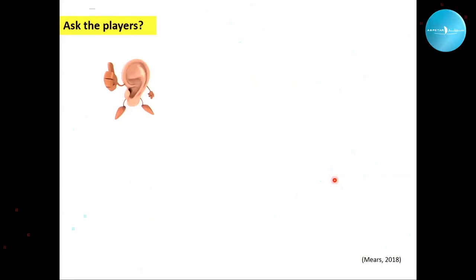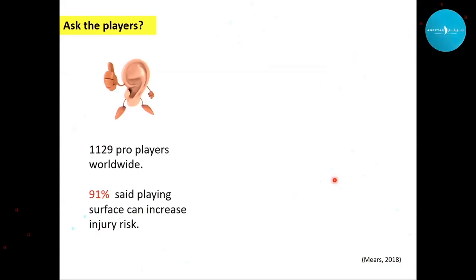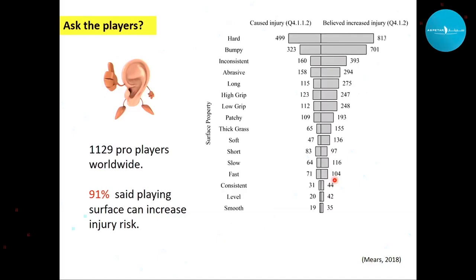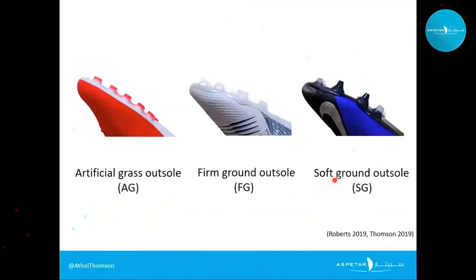When considering shoe and surface interaction, it's probably good to ask the players what they like. Mears did exactly that in Sports Medicine journal in 2018, asking a large cohort of professional players what they thought of the playing surface and whether it posed any increase in injury risk. 91% said they thought surface can increase injury. When pushed on what properties, they said hard, bumpy, inconsistent surfaces, or high and low grip. They also mentioned that the type or condition of playing surface alters the footwear they might put on their feet.